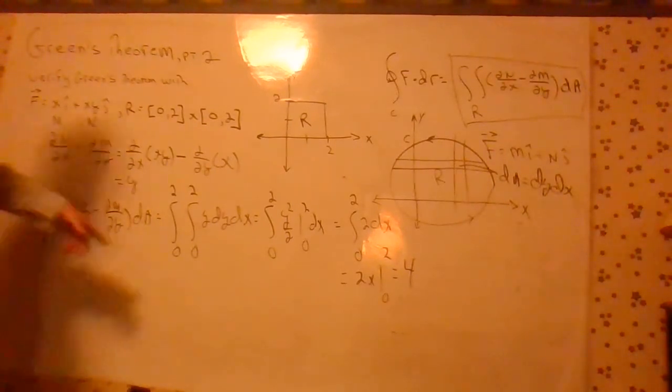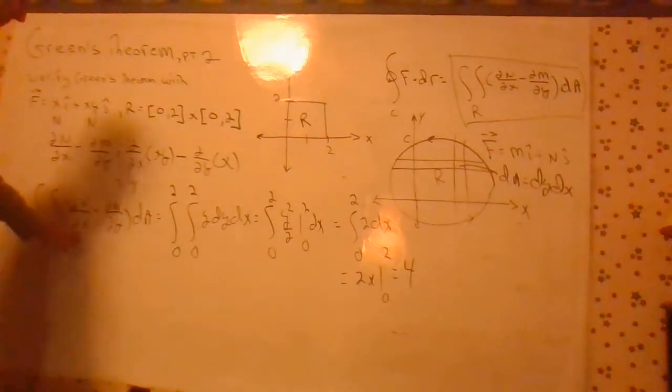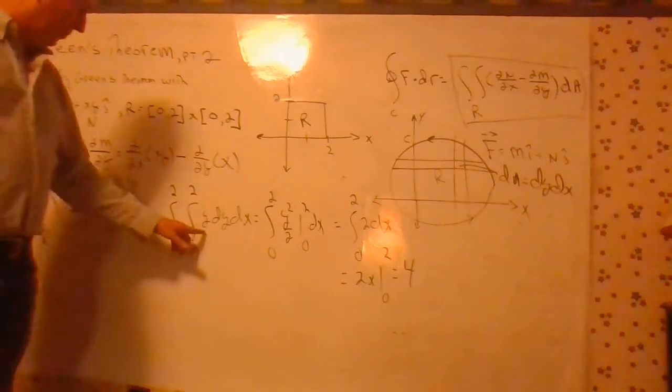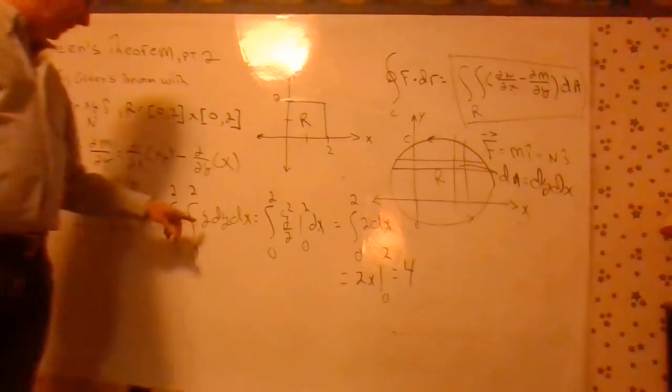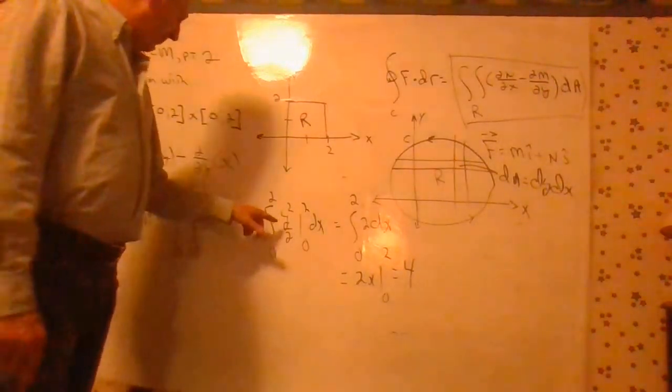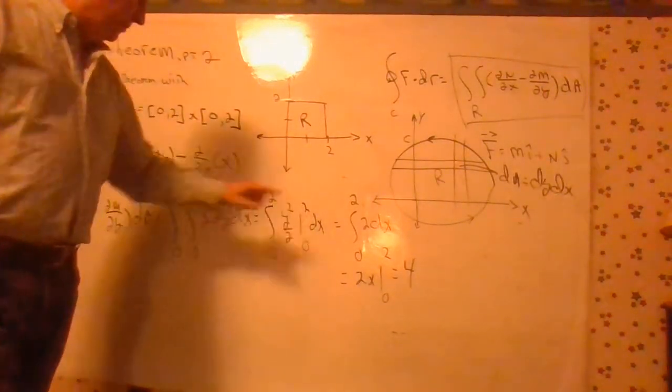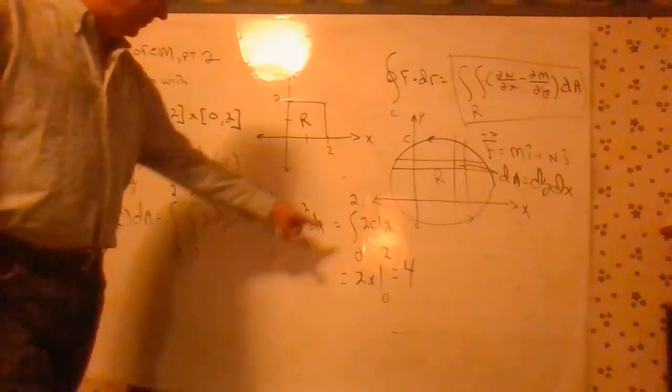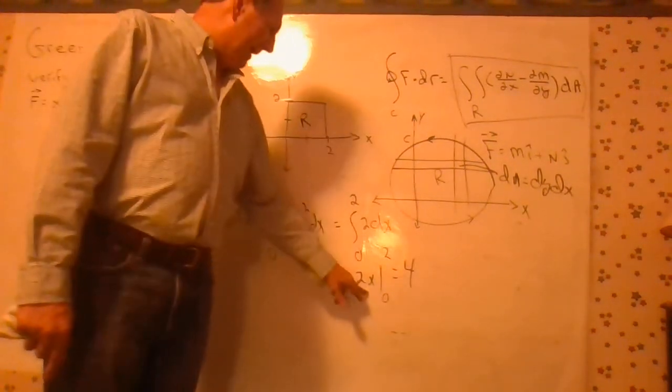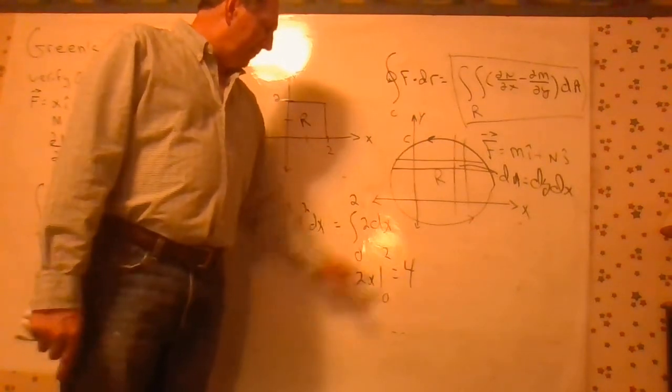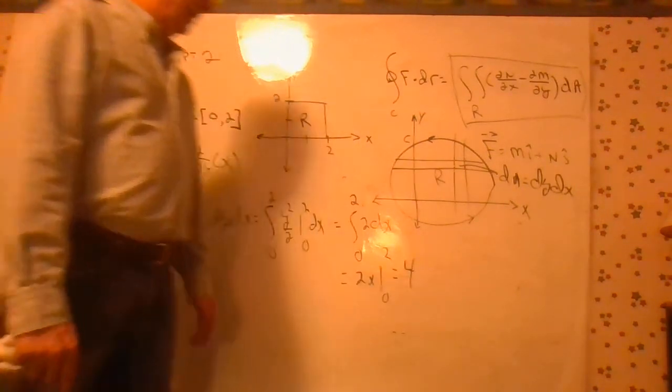So for our integral, we have to integrate y, replace this whole factor here with y. 0 to 2, 0 to 2, easy peasy, integrating on a square. y dy integrates to y squared over 2, 0 to 2. 2 squared over 2 is 2, so you get a 2 here. 2 dx gives us 2x from 0 to 2, which is 4, as promised.